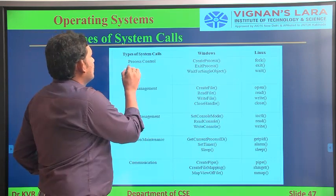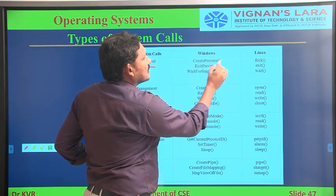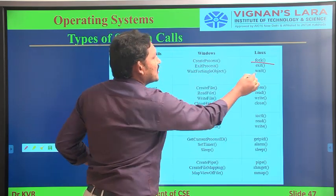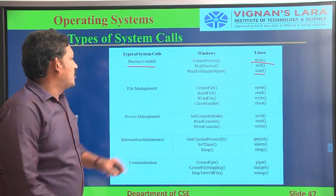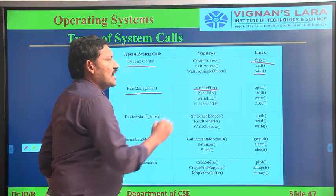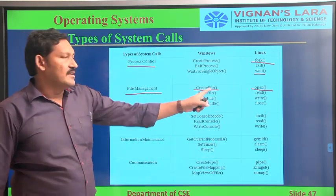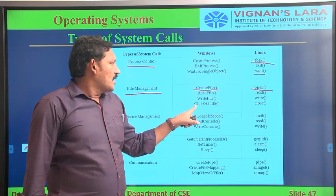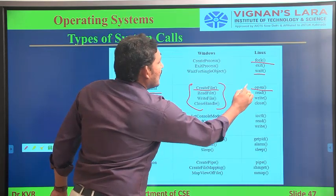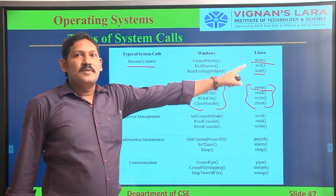For Windows we use 'CreateProcess'; in Linux we use 'fork'. 'ExitProcess' maps to 'exit', and 'WaitForSingleObject' maps to 'wait'. Coming to file management: for creating a file in Windows we use 'CreateFile'; in Linux we simply use 'open'. 'ReadFile' maps to 'read', 'WriteFile' maps to 'write', and 'CloseHandle' maps to 'close'. These are different file operations in Windows and Linux.